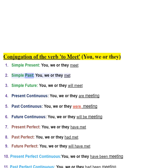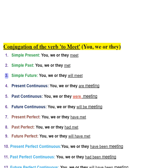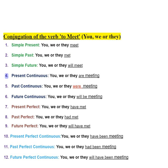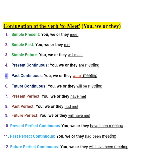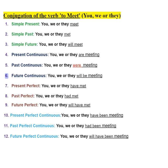You, we, or they: 2. Simple past — you, we, or they met. 3. Simple future — you, we, or they will meet. 4. Present continuous — you, we, or they are meeting. 5. Past continuous — you, we, or they were meeting.